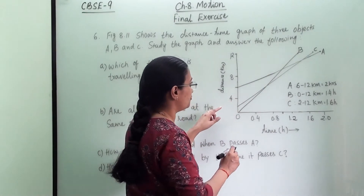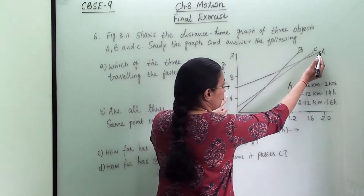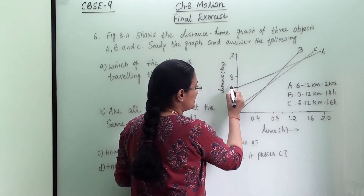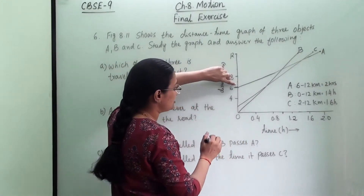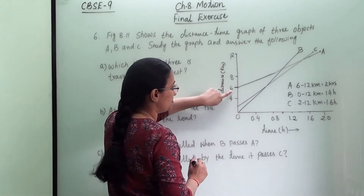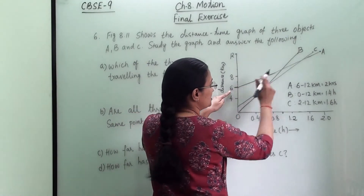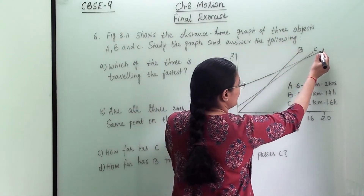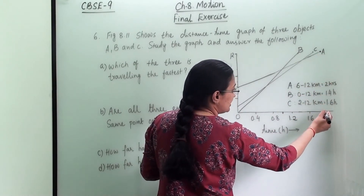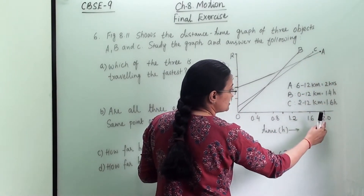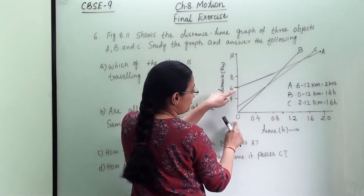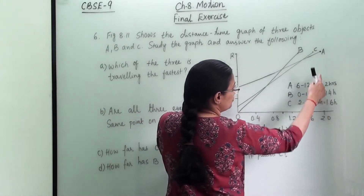First, let us check object A. Object A's travel does not start from 0 km — it starts from 6 km. If we extend this line towards the x-axis, it shows 2 hours, meaning the journey starts at 0 hours and finishes at 2 hours.